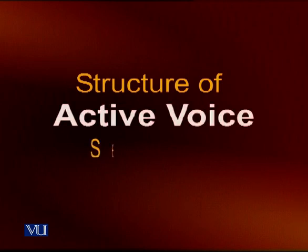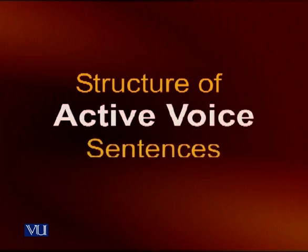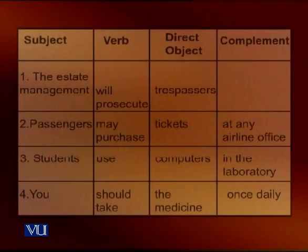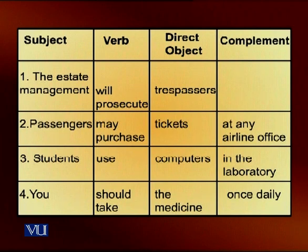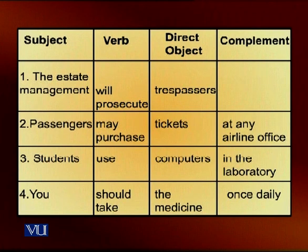Looking at a chart, sentences are written either in the active or in the passive voice. The structure of an active voice sentence has four columns: subject, verb, direct object, and complement statement. In an active voice sentence, the verb has a direct object.